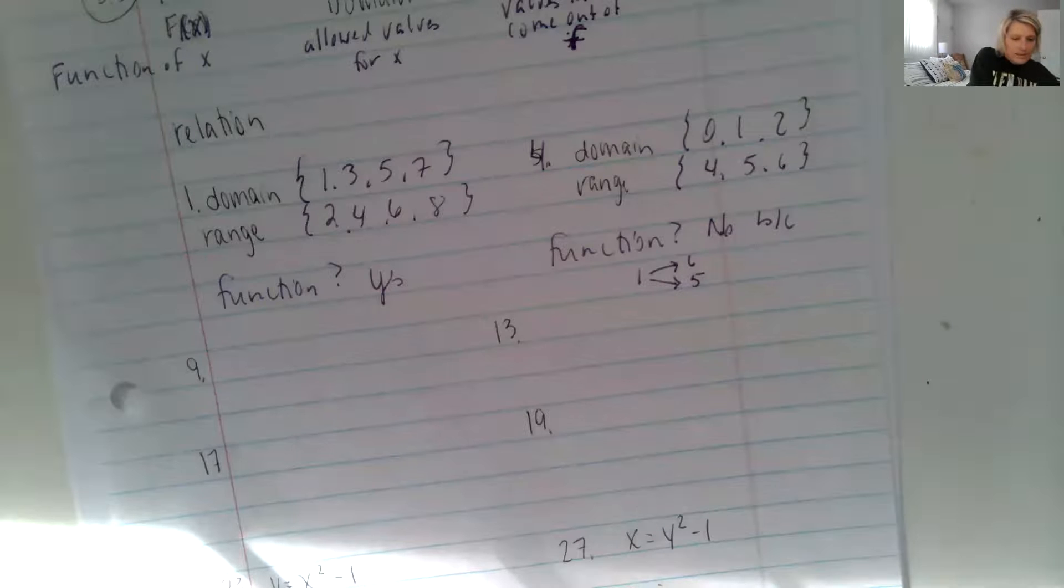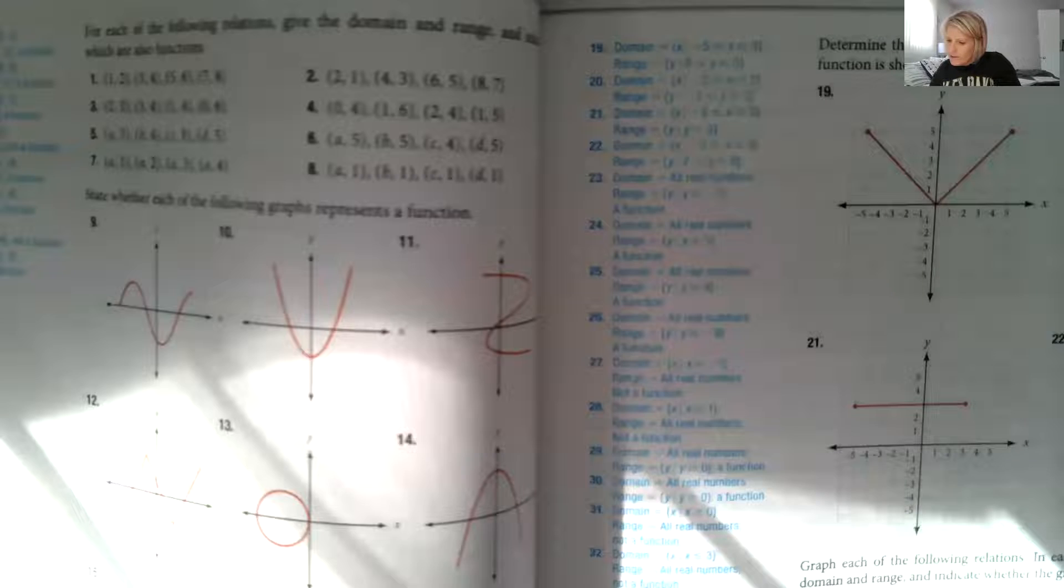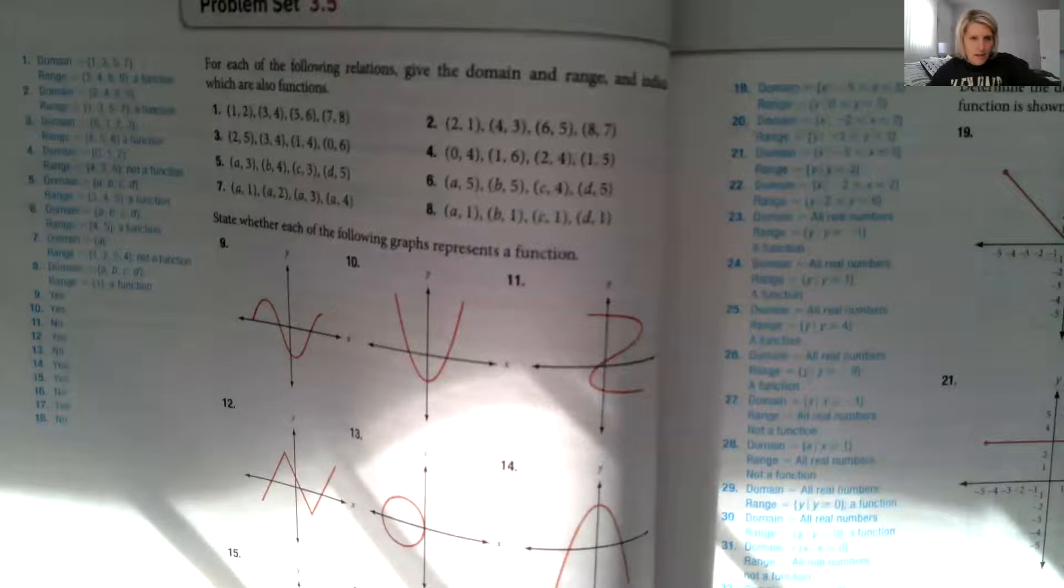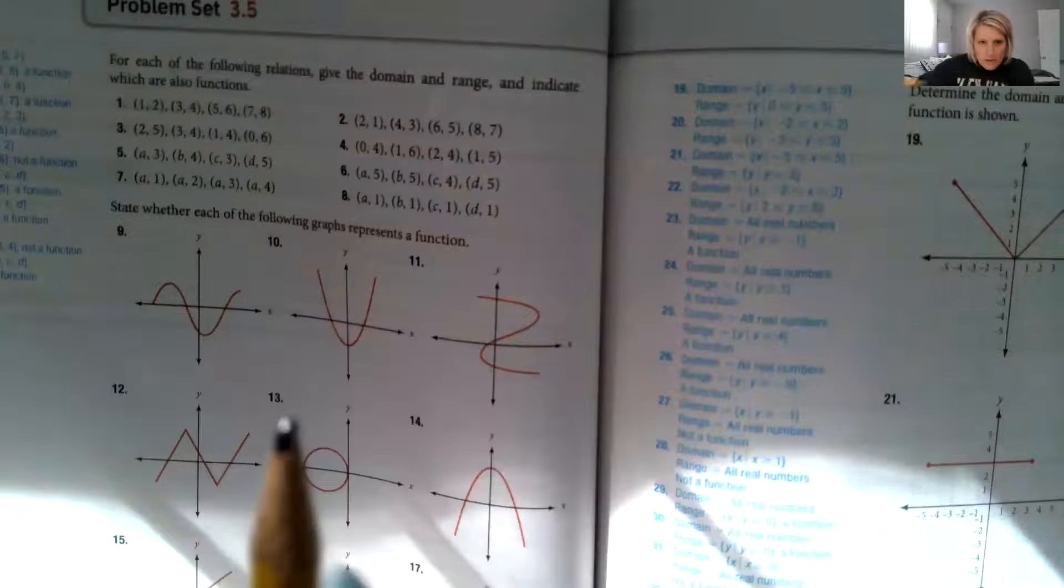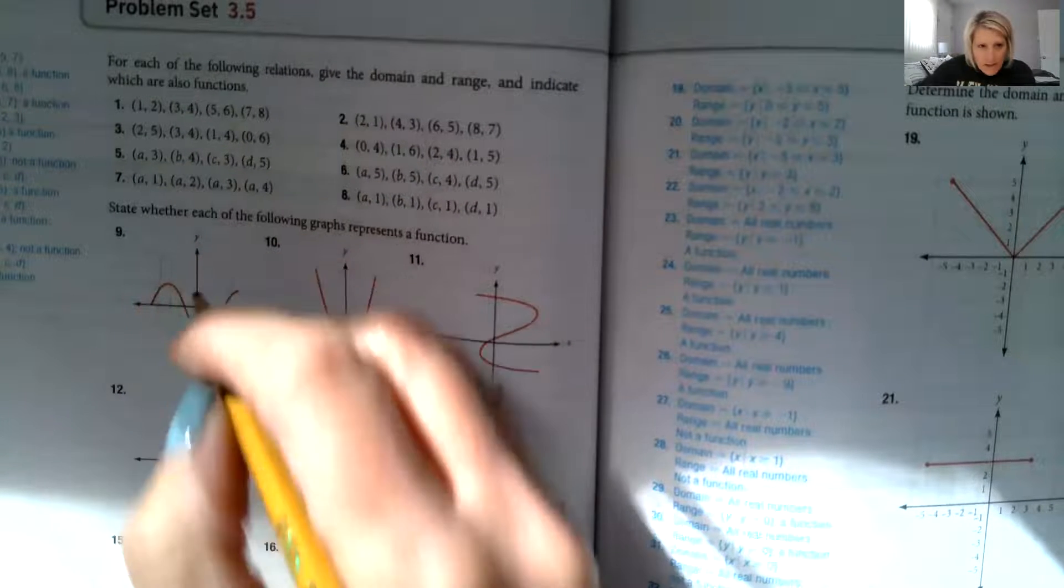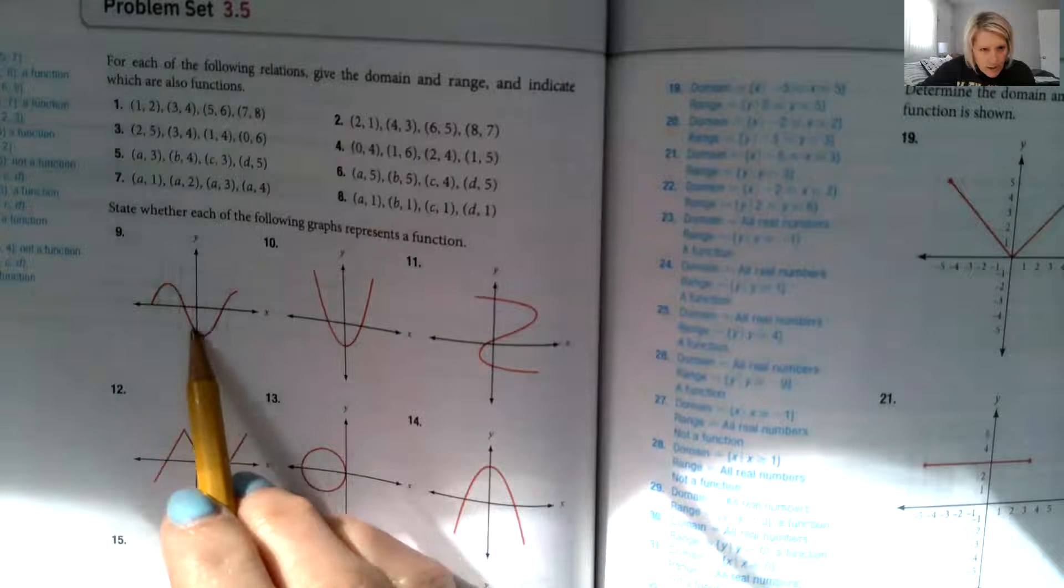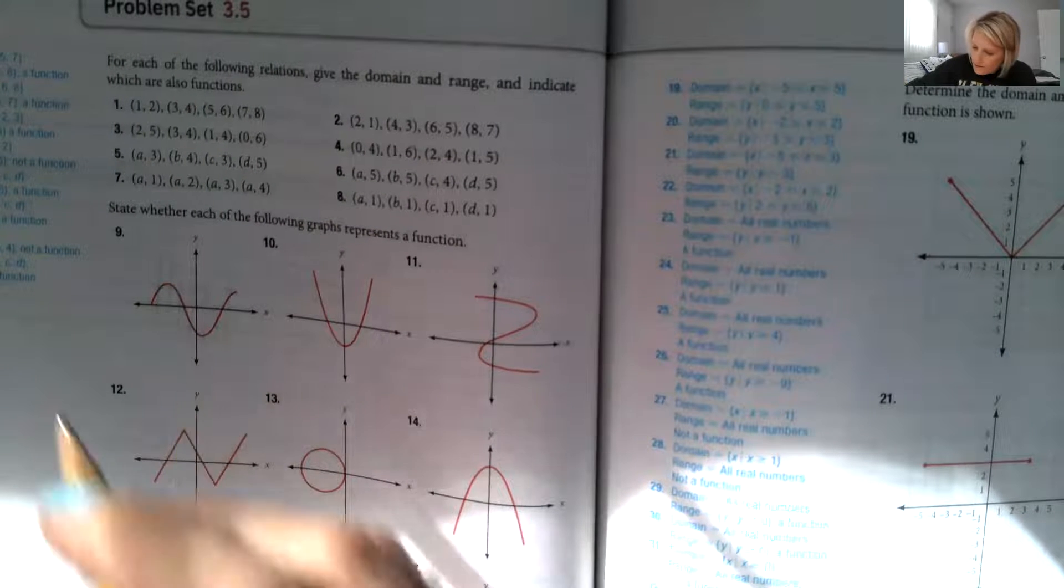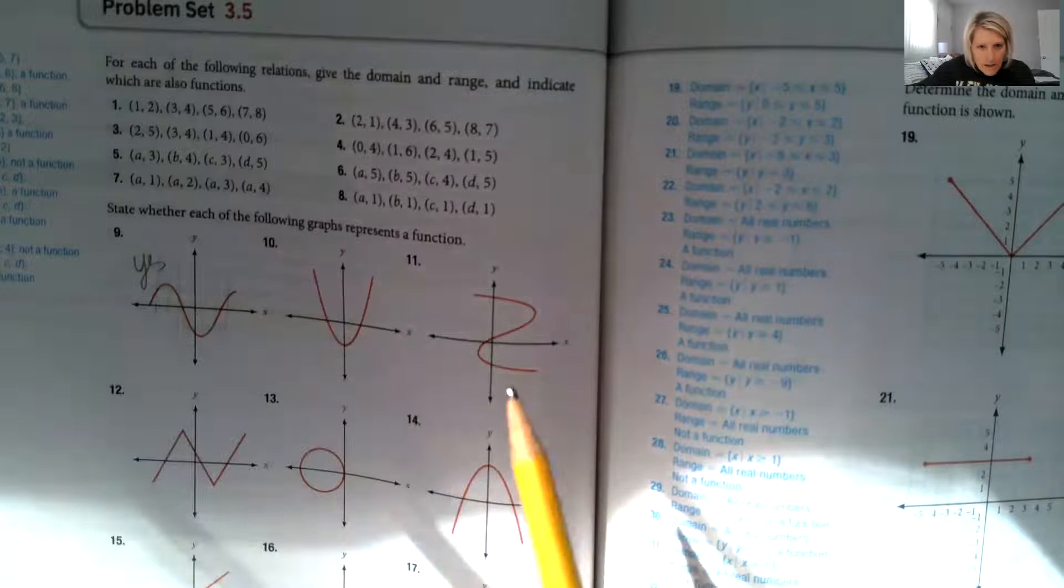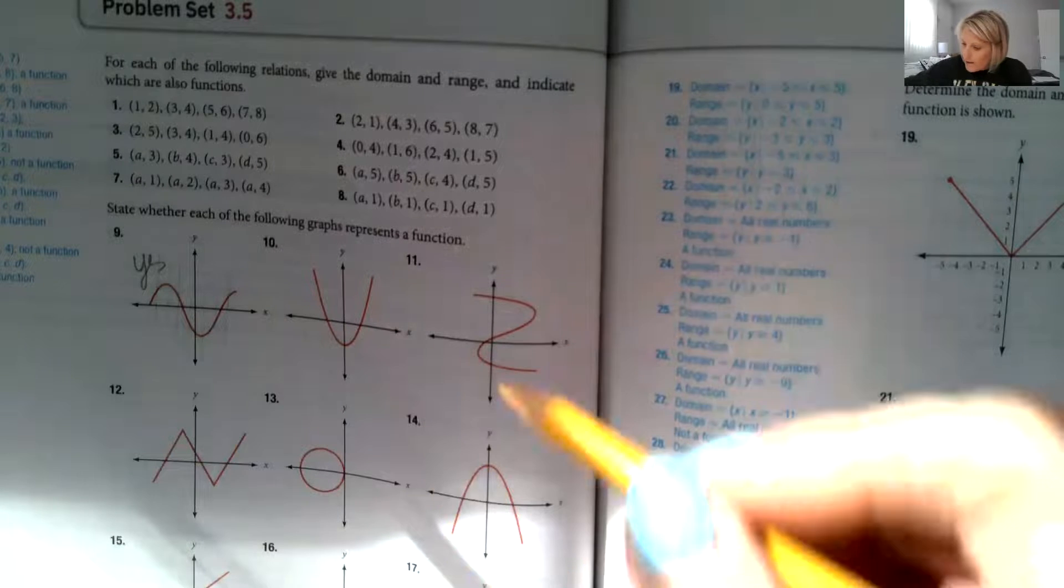So if it passes this vertical line test. So let's look here. So I wanted to look at 9 and 13. So 9, if I were to do vertical lines through here, it looks like each of them only crossed my graph once. So yes, it's a function.